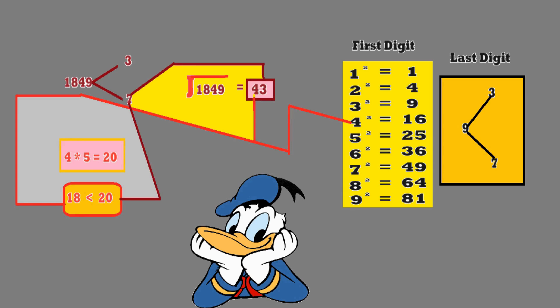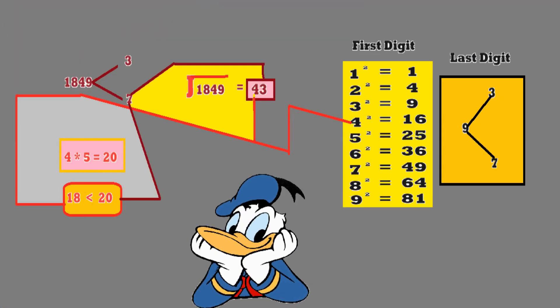Let's calculate the square root of 1849. The number ends with 9, so the last digit will be 3 or 7. Taking the first two digits — 18 — we see 18 is greater than 4² (16) and less than 5² (25), so the first digit is 4. Multiplying 4 by the next number 5 gives 20. Since 18 is less than 20, the last digit is the lesser number, 3. So the answer is 43. Thanks for watching.